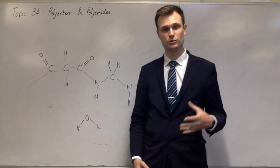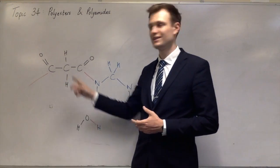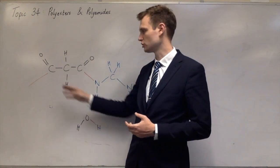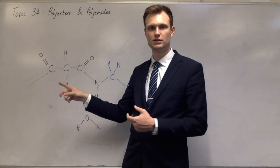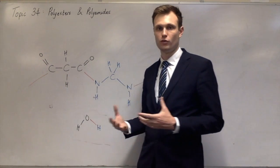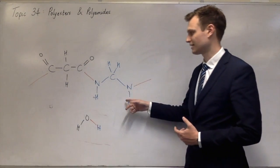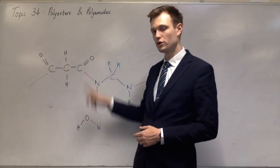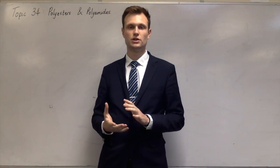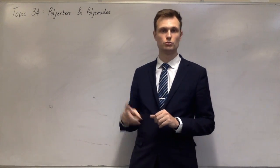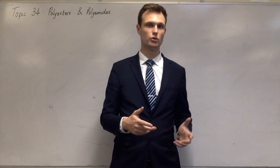With both polyesters and polyamides, I didn't have to use propanedioic acid — I could have used any di-carboxylic acid, such as propanedioic acid or butanedioic acid. It could be any length of carbon chain, or a benzene ring, or anything — it just needs two carboxylic acids on it. The important functional groups are the amide group for polyamides and the ester group for polyesters. Given this information, you need to be able to draw the repeating unit given the two monomers, or determine the two monomers given the repeating unit.